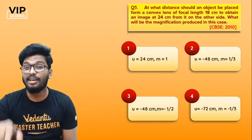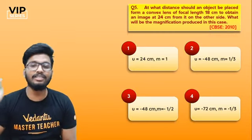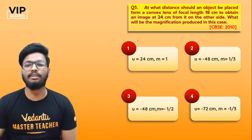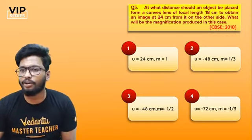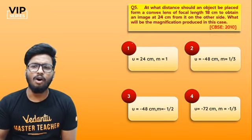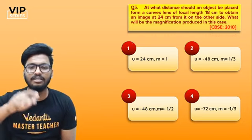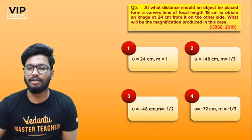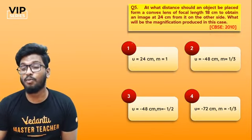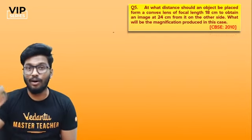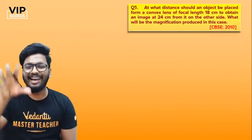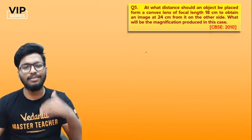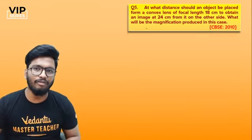The fifth question, from CBSE 2010: at what distance should an object be placed from a convex lens of focal length 18 cm to obtain an image at 24 cm from it on the other side? Also find the magnification. Make sure you solve this with me — it was a CBSE board exam question. The more questions you solve, the better it gets.